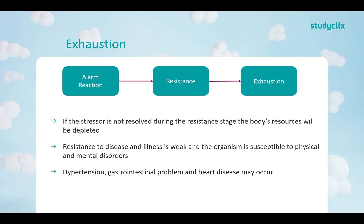Hypertension means high blood pressure. Gastrointestinal problems arise because the sympathetic nervous system decreases digestion, leading to things like constipation. Heart disease is another condition cortisol can cause. In very extreme cases, it can even lead to death — if an organism is extremely stressed for a really long period of time — though that is in very rare circumstances.